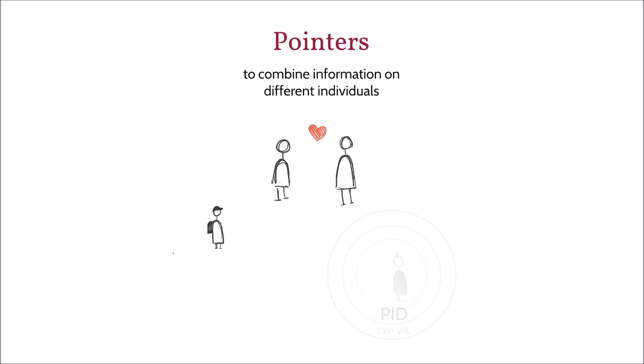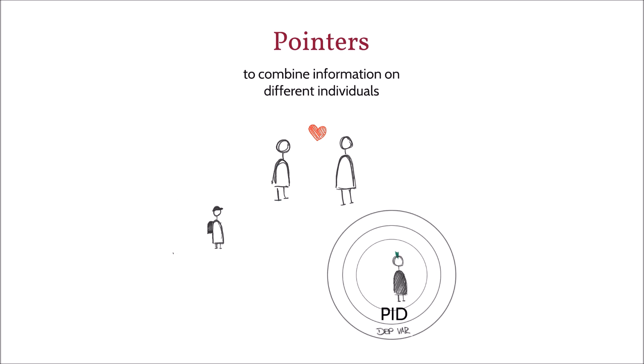For children aged 17 and above, and also for all adults, you find pointers to the parents' IDs in the BioParent file. The pointer M and R contains the mother's ID, and the F and R pointer contains the ID of the partner of the mother.